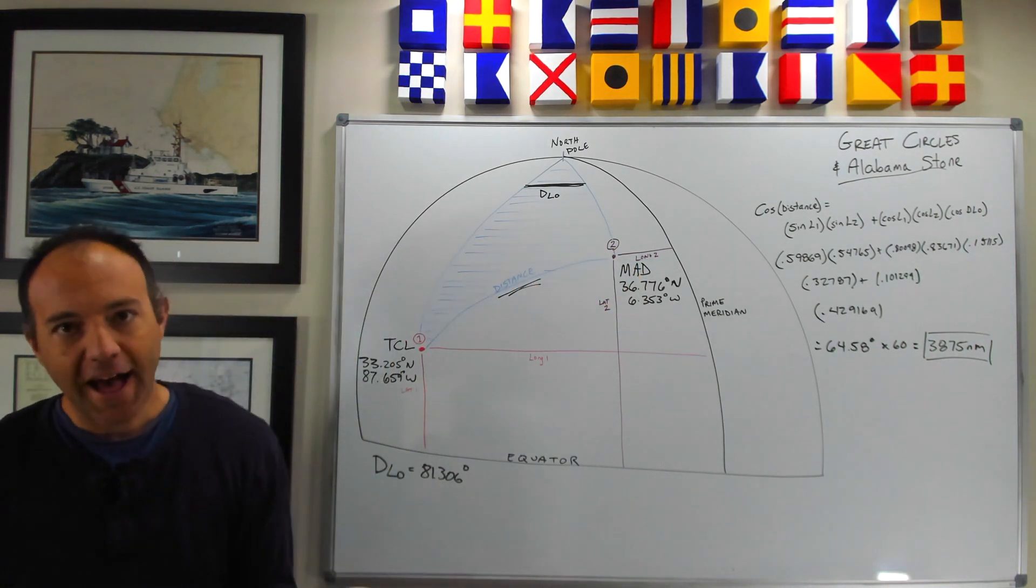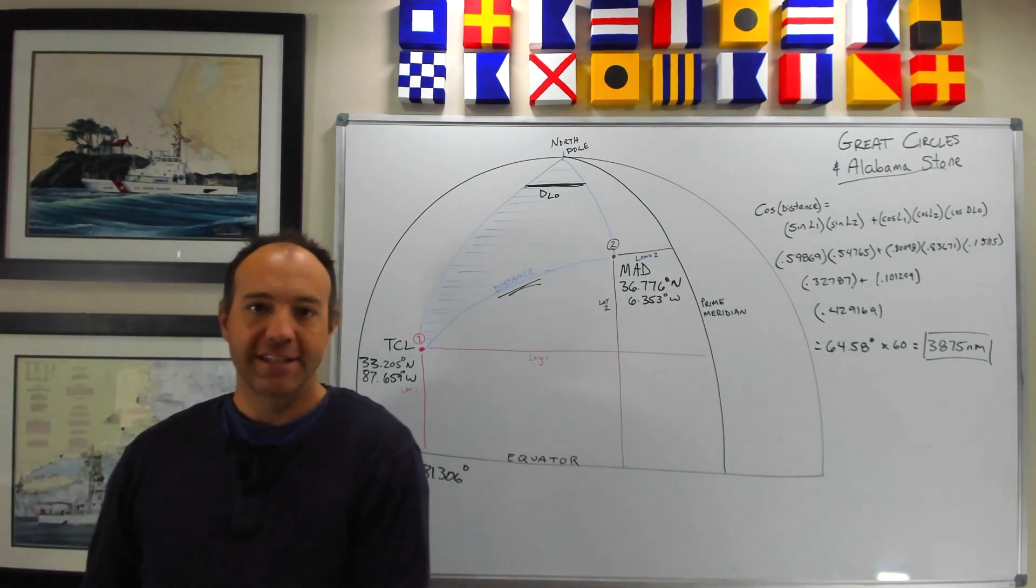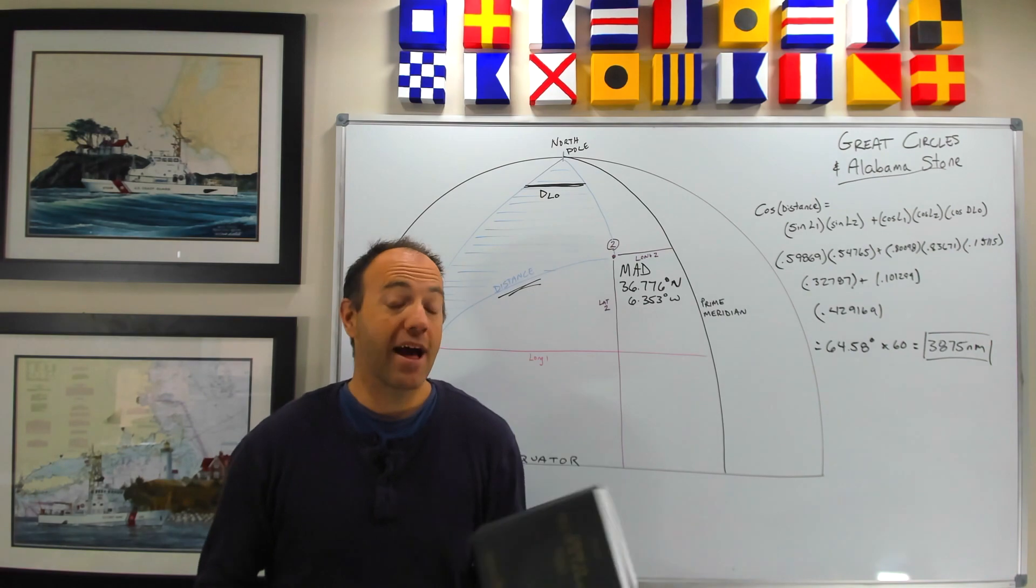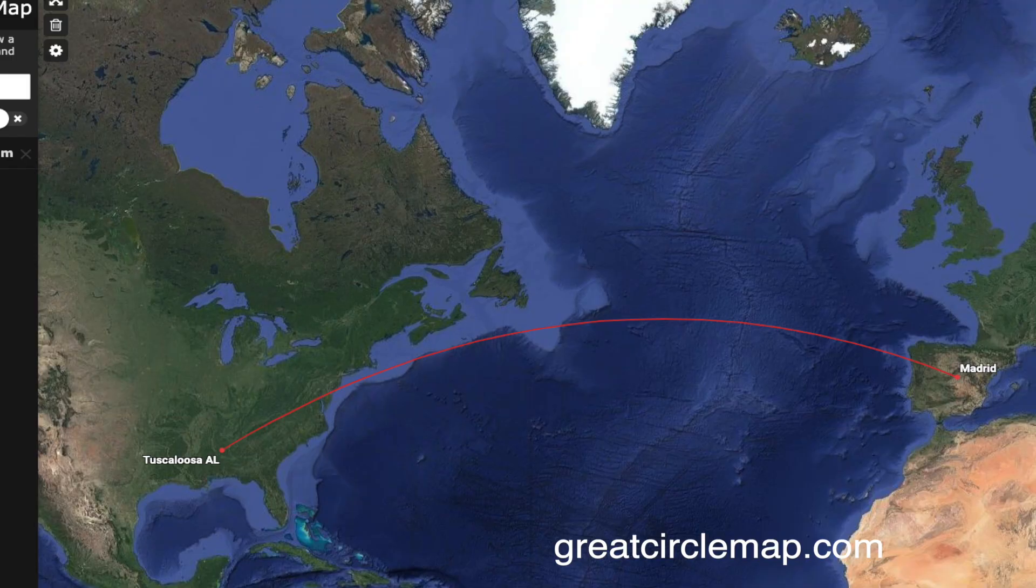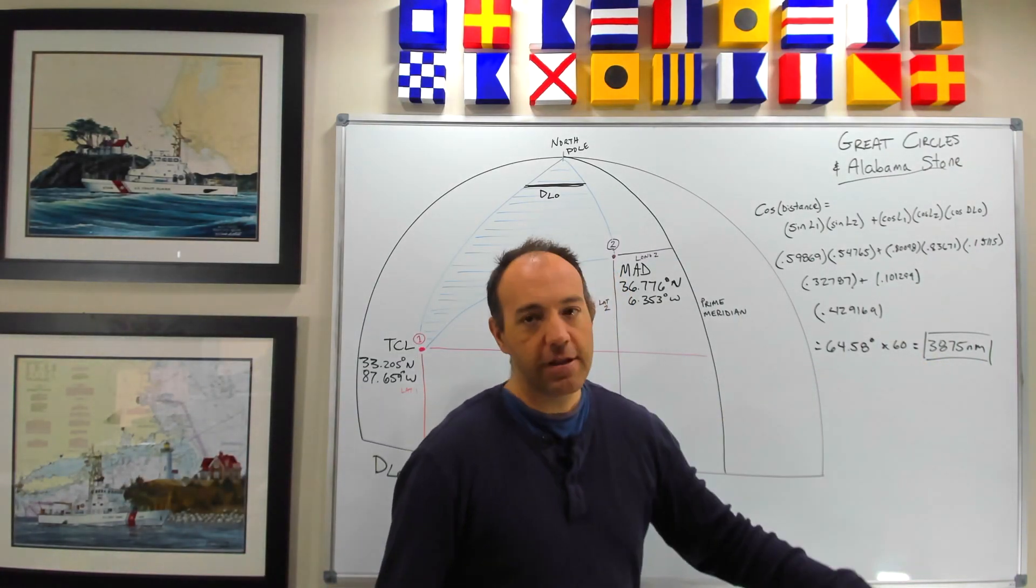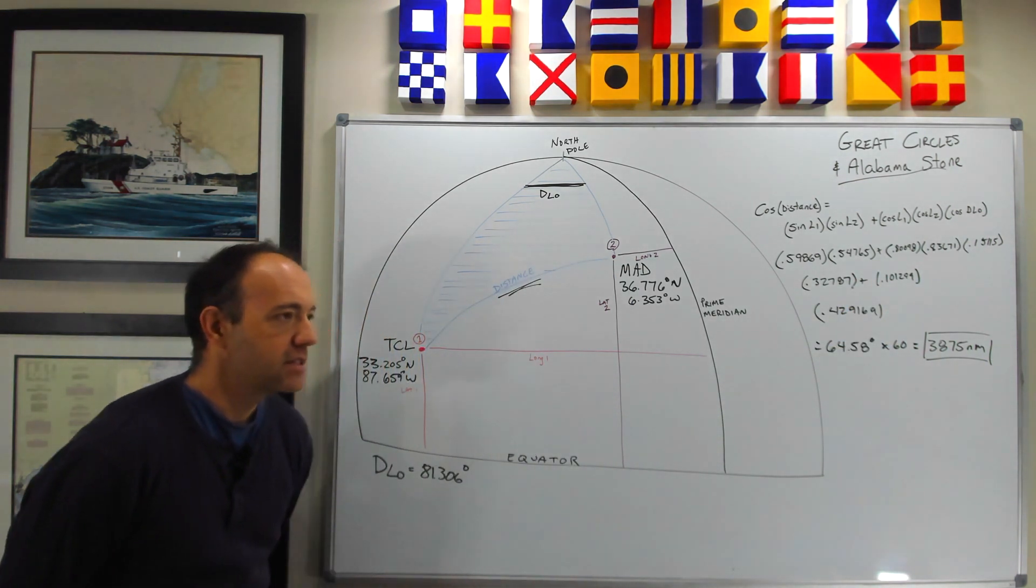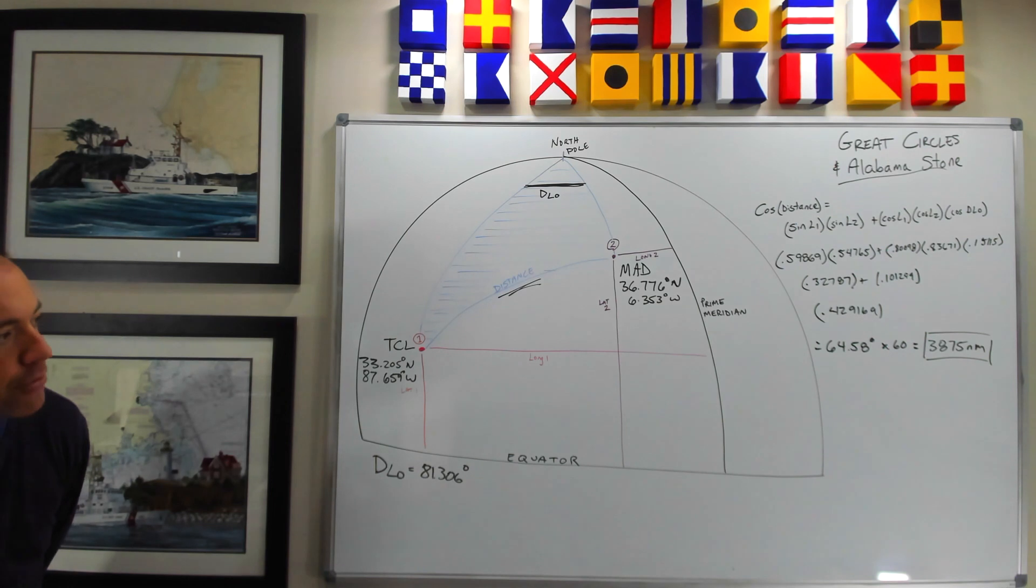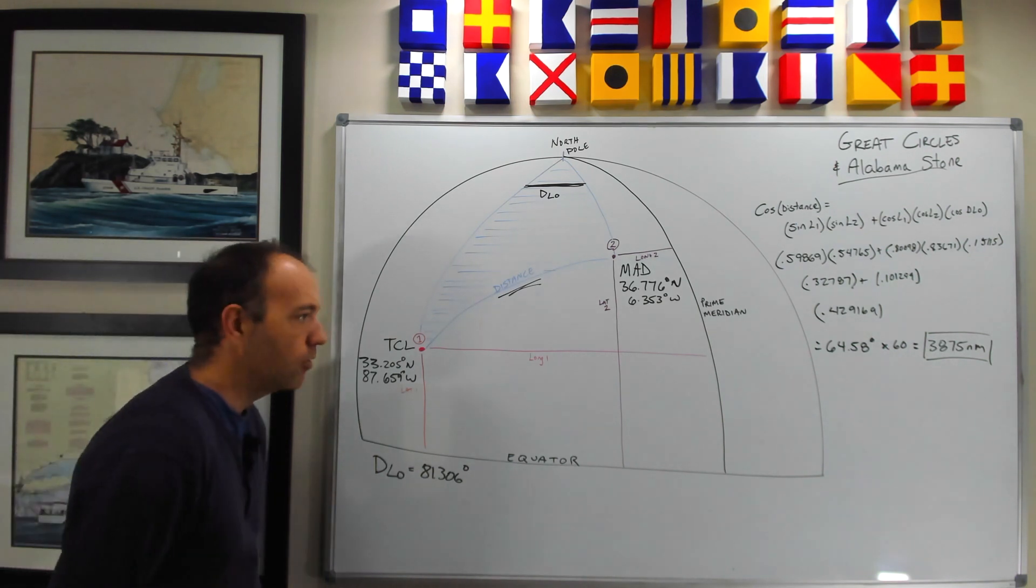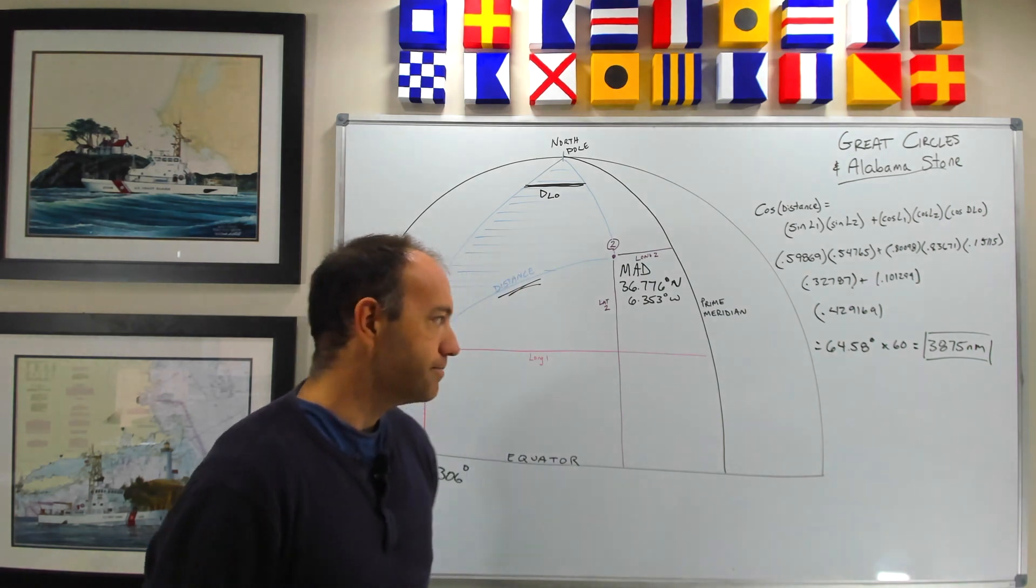So you can do that in many ways. You don't have to do the formula from Bowditch, although if you are taking a Coast Guard exam, you will have to do that. You can use web apps all over Google. You can search for Great Circle Calculator and find many good ones to get that same distance. And you might get a slightly different version than me, depending on how I rounded or if I typed into my calculator a different way than you did, but in the vicinity of 3,875 nautical miles. If you do get a slightly different answer, don't worry about it.